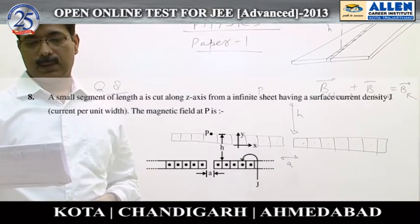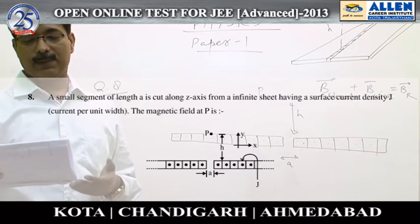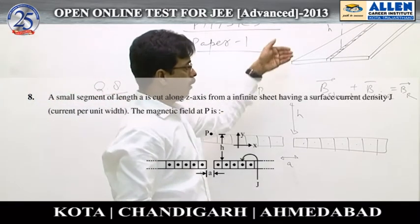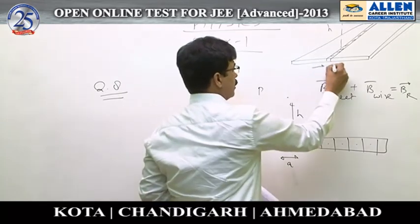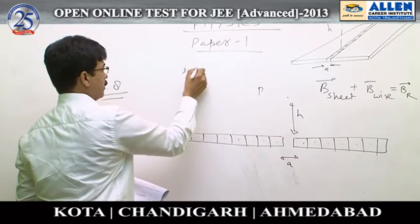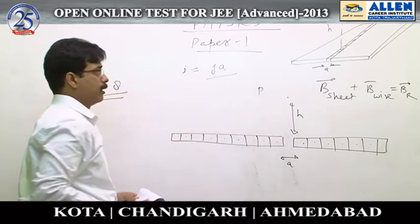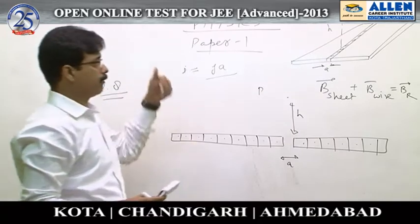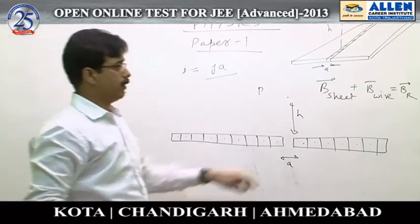Question number 8. This question is based on the concept of the principle of superposition. As you can see, there is an infinite sheet from which a wire has been removed — this is the resultant configuration. The thickness of the wire is A, meaning the current carried by this wire is current per unit width multiplied by A. At the given point P, the resultant magnetic field has contributions from both the sheet and the wire.